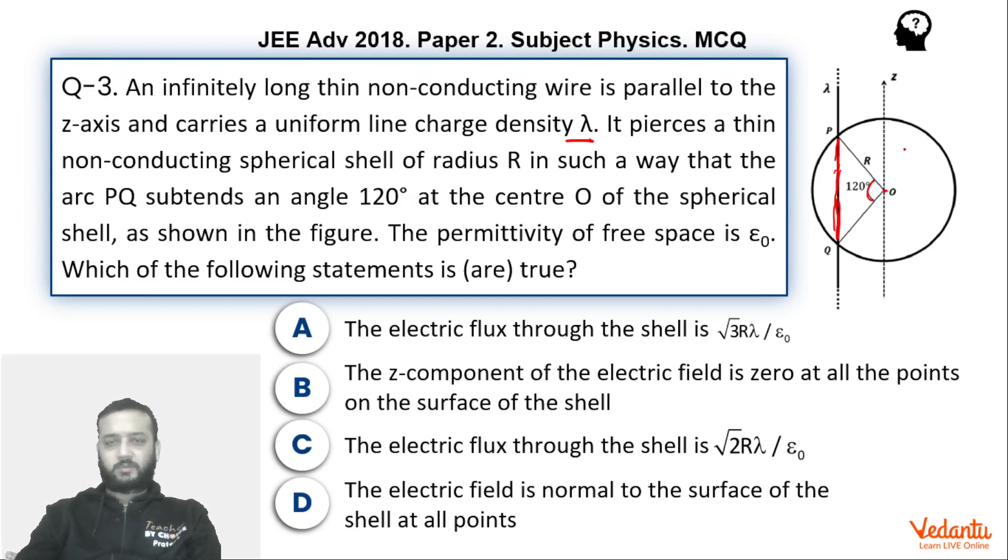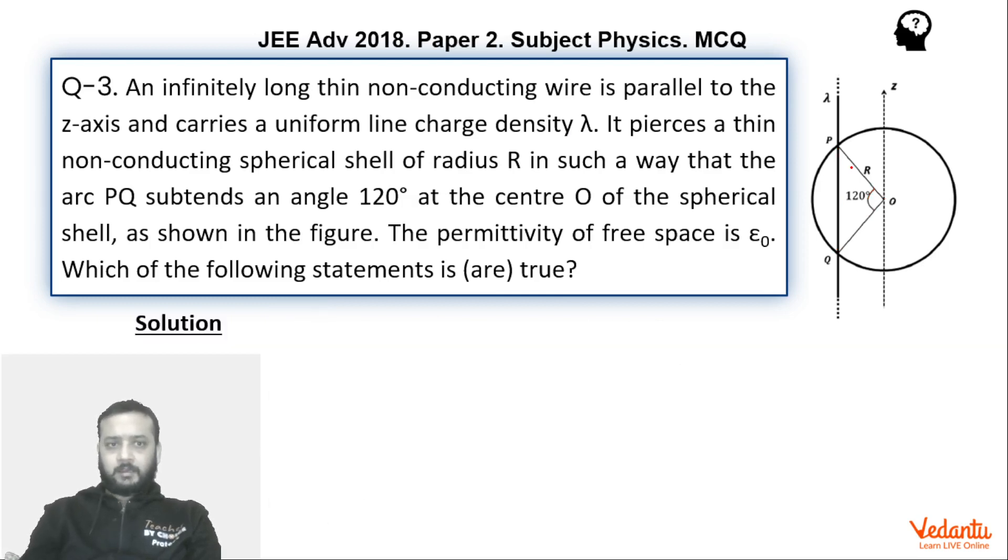We have to talk about the flux through this sphere and the nature of the electric field, that means the direction of the electric field on the surface of the sphere due to this wire. The question is fairly simple. We can see that for finding the flux we can simply use Gauss law. So basically integral E dot dS, this will be equals to q enclosed upon epsilon naught.